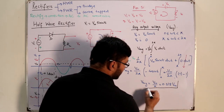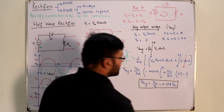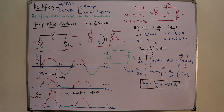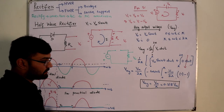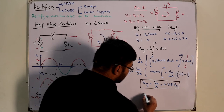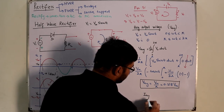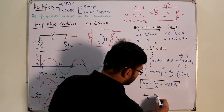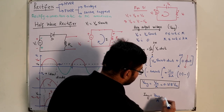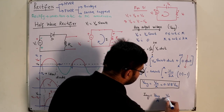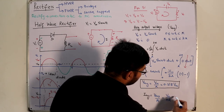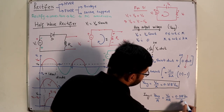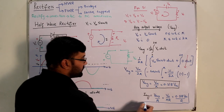The average output voltage comes out to be V_m / π, or equivalently 0.318 × V_m. This is an important formula. From here you can also find the average load current: I_average = V_average / R = 0.318 × V_m / R.